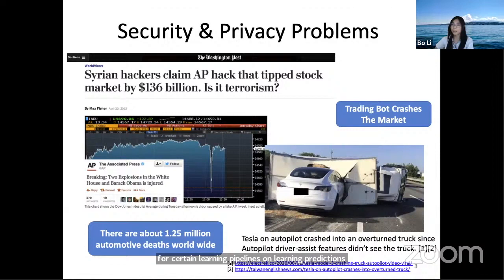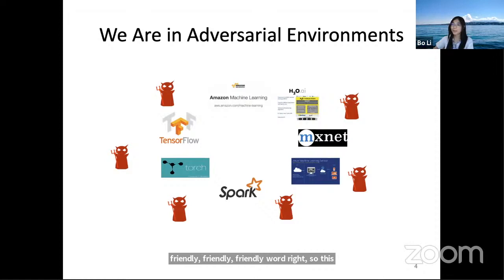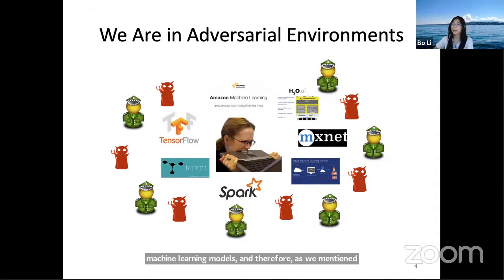We're still living in a friendly world with convenient platforms to develop scalable machine learning pipelines and models, but we are also living in an adversarial environment. A typical machine learning practitioner still has a very hard life developing secure or robust models. Therefore, we really need to understand different attack strategies and threat models better, and develop robust and safe machine learning pipelines for applications including autonomous driving.